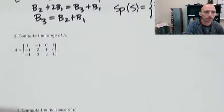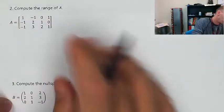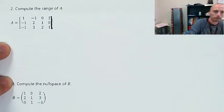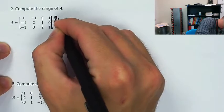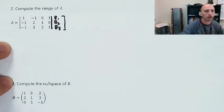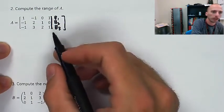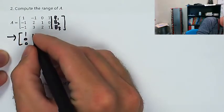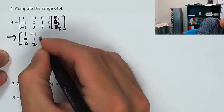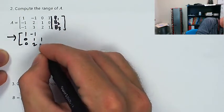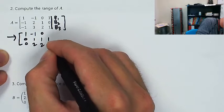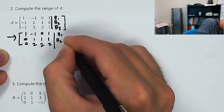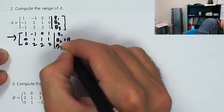Now we're going to compute the range of A. We're basically doing the same thing — augment with b1, b2, b3 and row reduce. Adding row one to row two and row three: one, zero, zero, negative one, one, two. Adding, so that zero isn't going to change; adding a one here and then two. So this is b2 plus b1, and this is b3 plus b1.